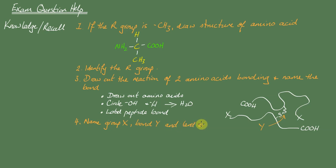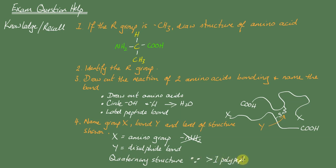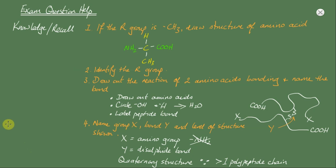Finally, you might be given a diagram like this and asked to name group X, bond Y, and the level of structure shown. Notice that the name of X is an amino group or an amine group. If you write NH2 you will not get the mark because you haven't named it. Y is a disulfide bond because it involves two sulfurs, and it is quaternary because it's involving two polypeptide chains. This is in fact an application question because it's giving you a novel scenario.